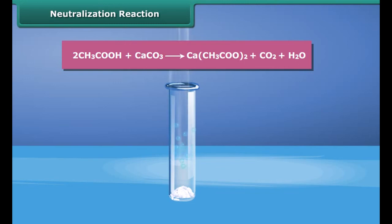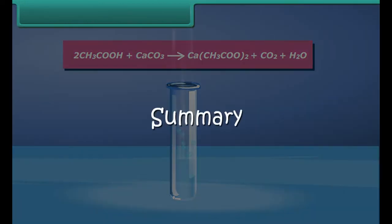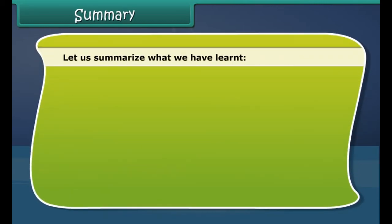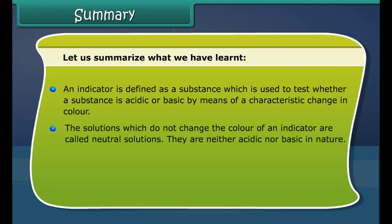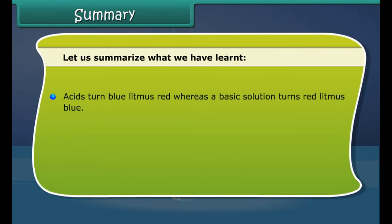Let us do an activity to understand neutralization. Take a piece of chalk, vinegar, and a test tube. Drop some crushed chalk into the test tube and add vinegar. Watch what happens — the chalk reacts with the vinegar and bubbles of carbon dioxide come out. A white solid, calcium acetate, is formed. Chalk is calcium carbonate and vinegar is acetic acid in water. When they react, carbon dioxide, water, and calcium acetate are formed. Thus an acid reacts with a base to form a salt.